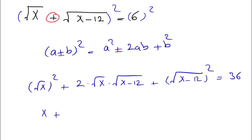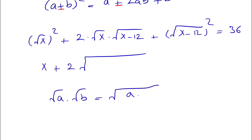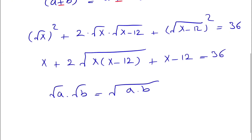Here we use the rule that √a times √b equals √(ab), so the middle term becomes 2 times √(x(x−12)), and the full expression is x plus 2√(x(x−12)) plus x minus 12 equals 36.